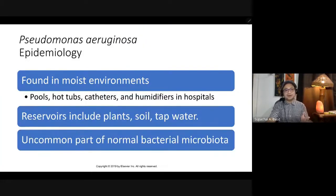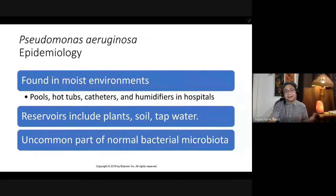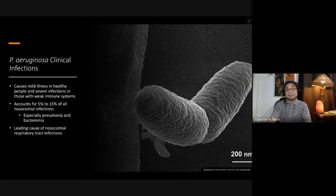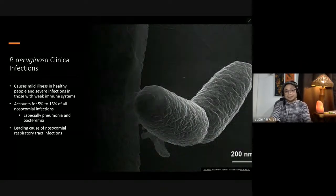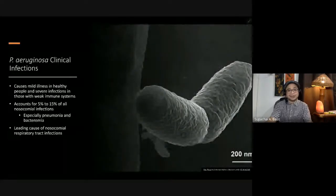One example of the fluorescent group is Pseudomonas aeruginosa, found in moist environments — particularly in pools, hot tubs, catheters, or humidifiers in hospitals. They love water and are the causative agent of hot tub syndrome. Their reservoir includes plants, soil, or tap water. Pseudomonas aeruginosa may cause mild illness in healthy people, but if you have comorbidities that weaken the immune system, the infection becomes more severe. It accounts for about 5% to 15% of all nosocomial infections and is the leading cause of nosocomial respiratory tract infection.